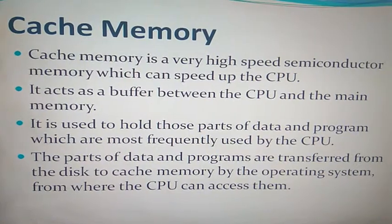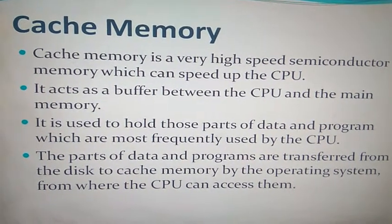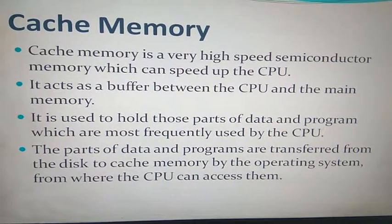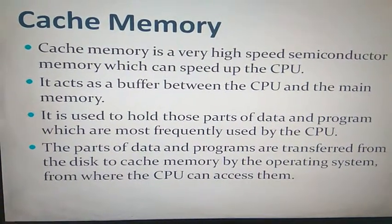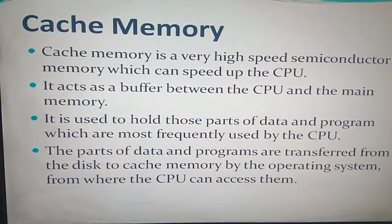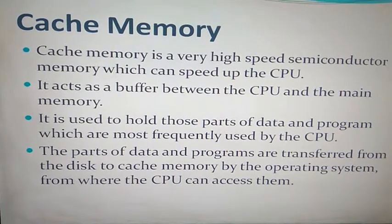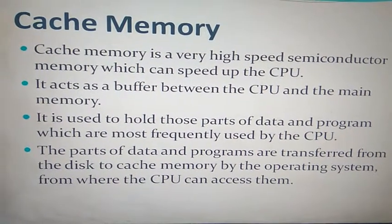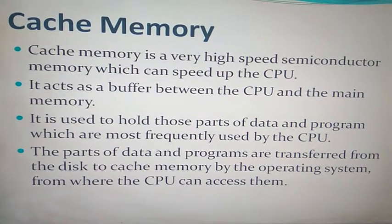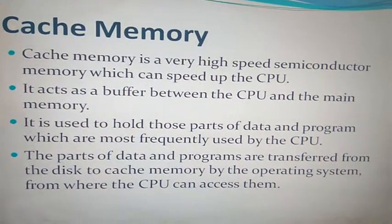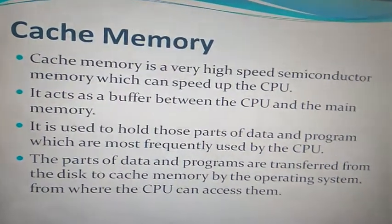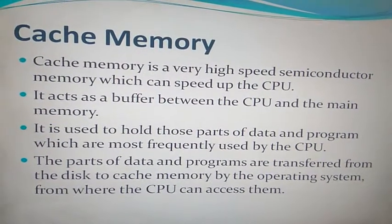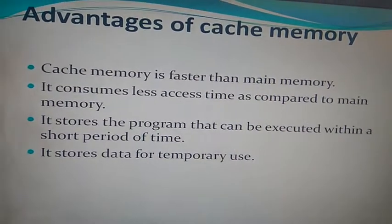Cache memory is used to hold those parts of data and programs which are most frequently used by the CPU — those things which the user uses most often in the computer. The parts of data and programs are transferred from the disk to cache memory by the operating system, from which the CPU can access them.